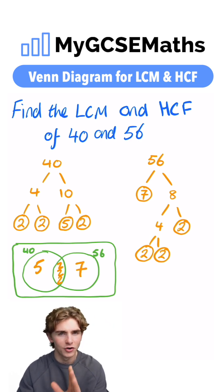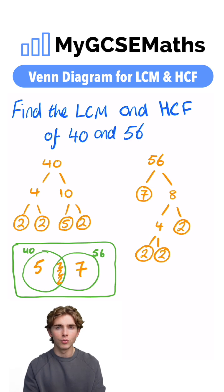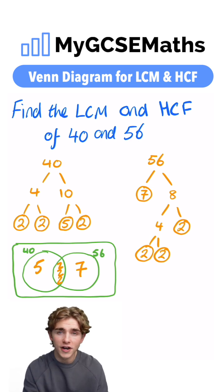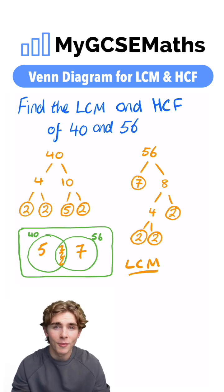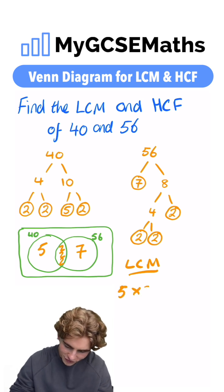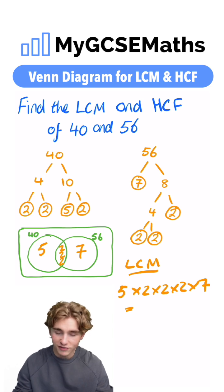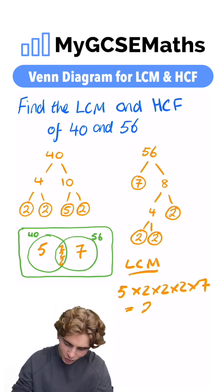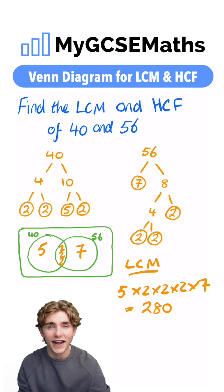In order to find our lowest common multiple, we're going to multiply together all of the numbers in our Venn Diagram. So our lowest common multiple is equal to five times two times two times two times seven. Two times two times two is eight, times five is 40, times seven gives us 280.